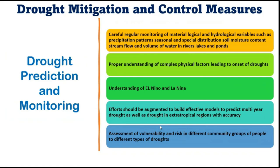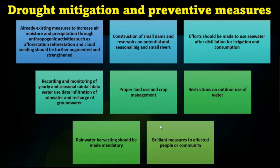Assessment of vulnerability and risk in different community groups is important to prepare for various kinds of droughts. Besides this, preventive measures include restrictions on outdoor water use. Existing measures to increase air moisture and precipitation include afforestation, cloud seeding, and other anthropogenic activities that should be strengthened.